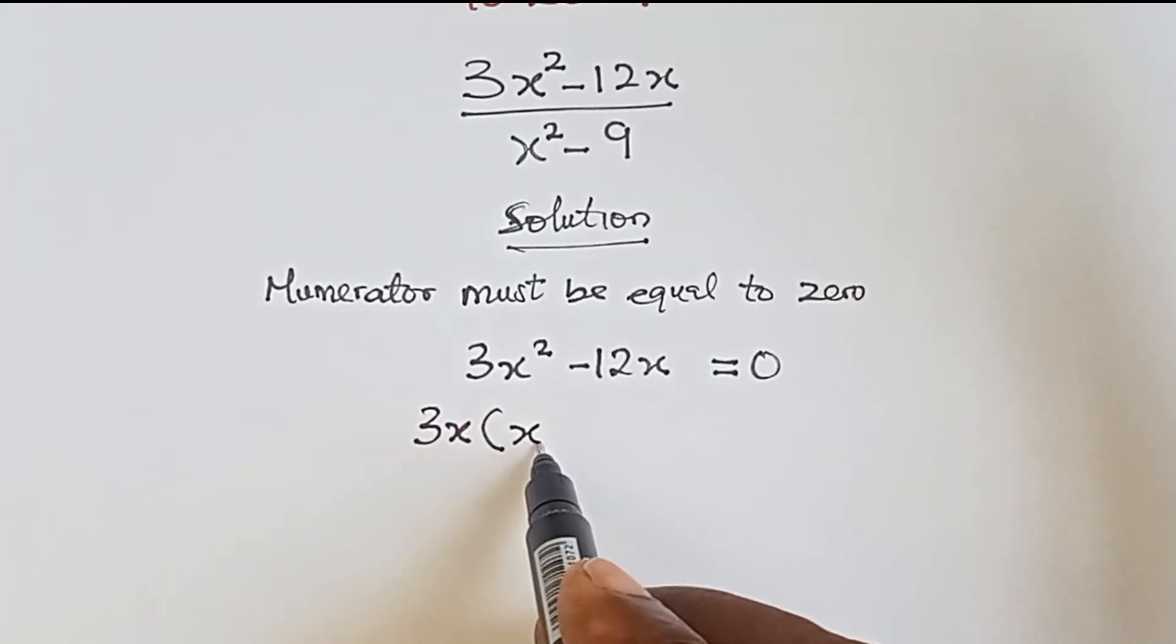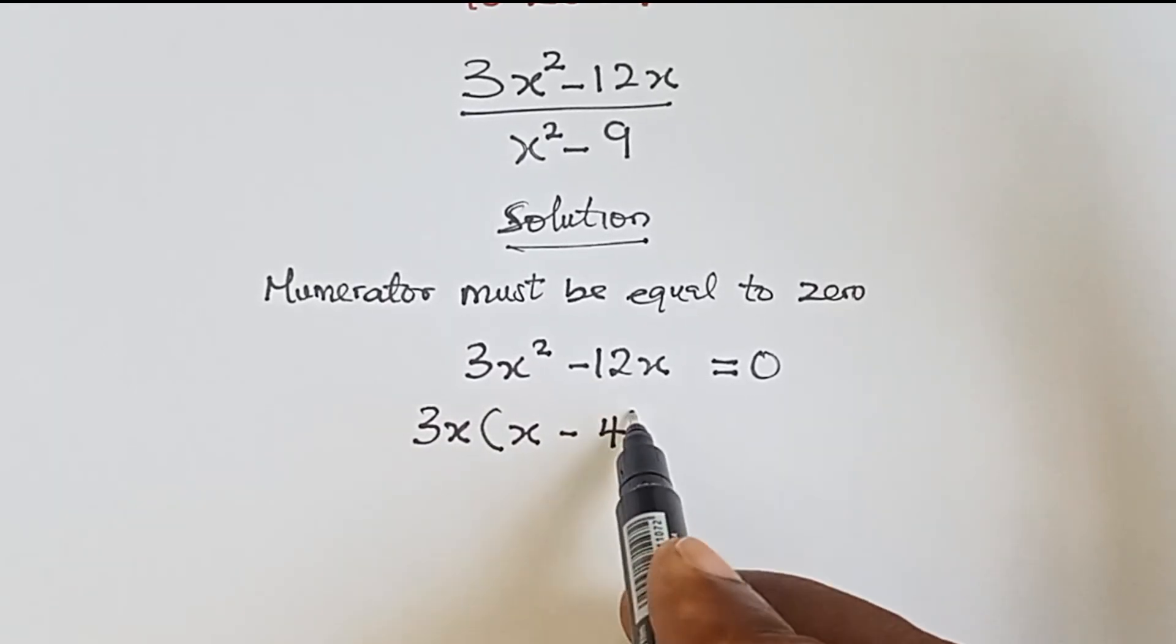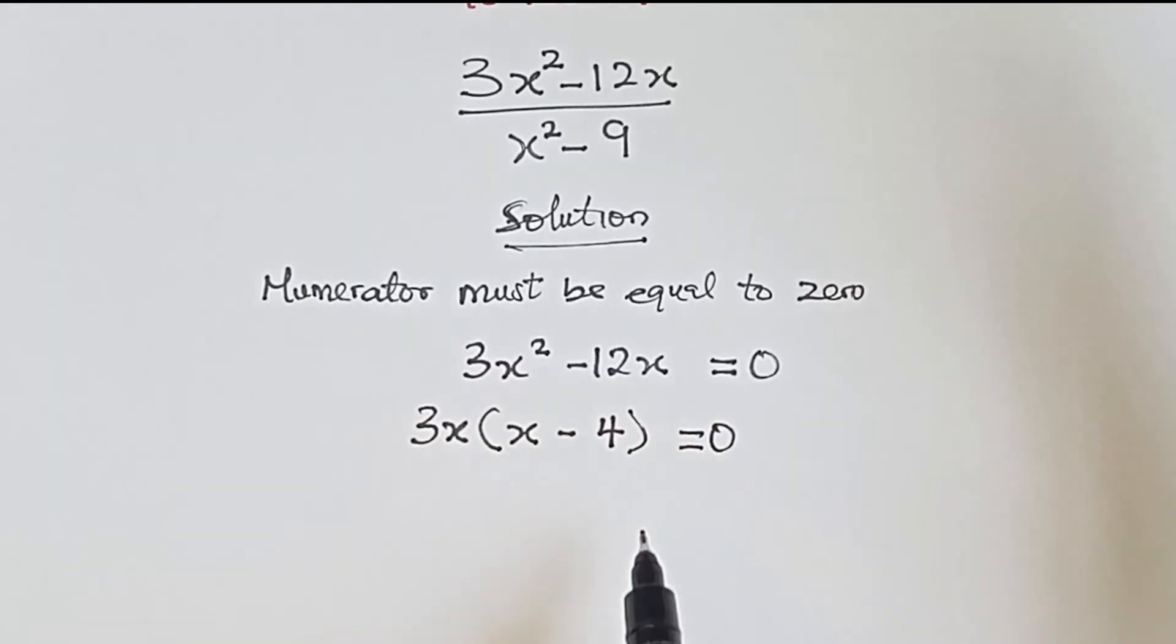What do we have here? We have x, and what do we have here? We have 4. Everything equals zero. Okay, by the time we expand this, we have 3x times x, we have 3x squared, 3x times minus 4, we have 12x, everything equals zero.